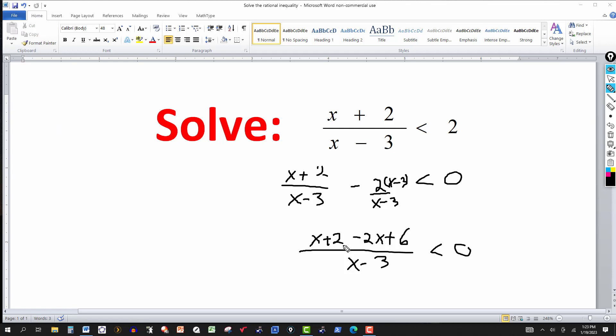Then I simply combine over here. So I'm going to write it over here: minus 2x and x, that's a minus 1x, so just minus x. And then 2 and 6 is 8, plus 8. And that's over x minus 3, and this stays less than zero.